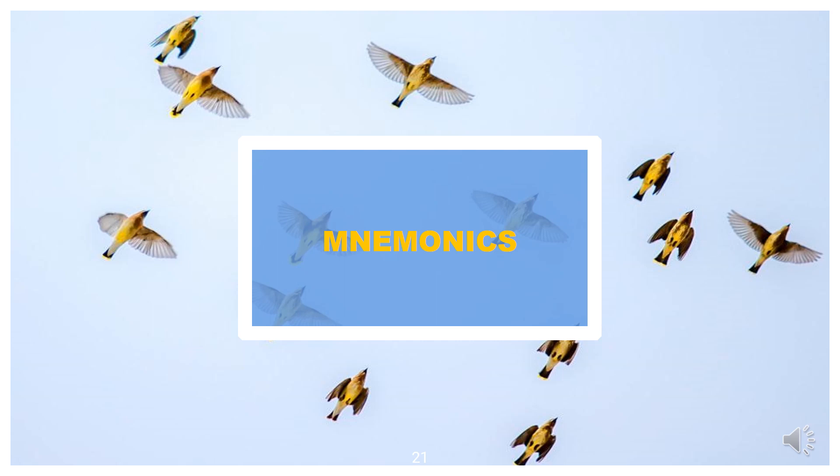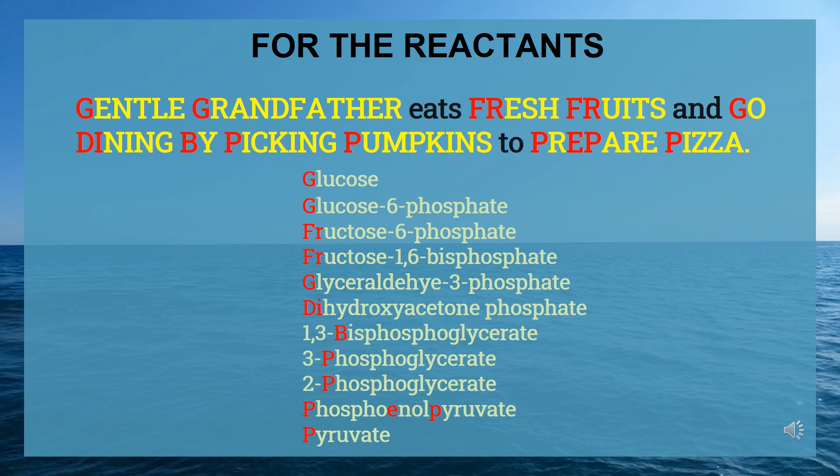Now let us see the mnemonics for glycolysis. For the reactants, the mnemonic is: 'Gentle grandfather eats fresh fruits and go dining by picking pumpkins to prepare pizza.' Glucose = Gentle; Glucose-6-phosphate = Grandfather; Fructose-6-phosphate = Fresh Fruits; Fructose-1,6-bisphosphate = Fructose; Glyceraldehyde-3-phosphate = Go; Dihydroxyacetone phosphate = Dining; 1,3-bisphosphoglycerate = By; 3-phosphoglycerate = Picking; 2-phosphoglycerate = Pumpkins; Phosphoenolpyruvate (PEP) = Prepare; Pyruvate = Pizza.